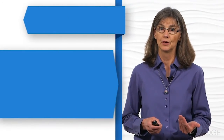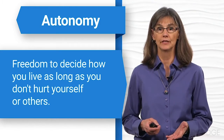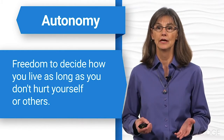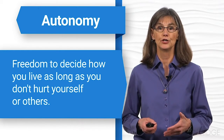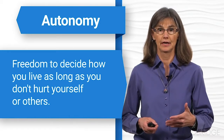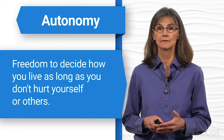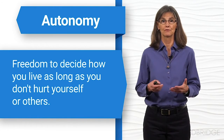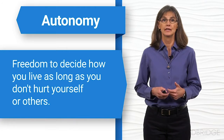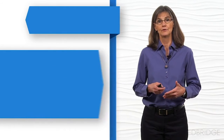The ethical principles called primary ethical principles — there are four of them. The first is autonomy, which is your freedom to decide how you live, your freedom to choose. As long as you don't hurt yourself or others, you can be very autonomous. It also includes respect for persons, self-determination, and we'll talk later about your right to consent and how you do that.